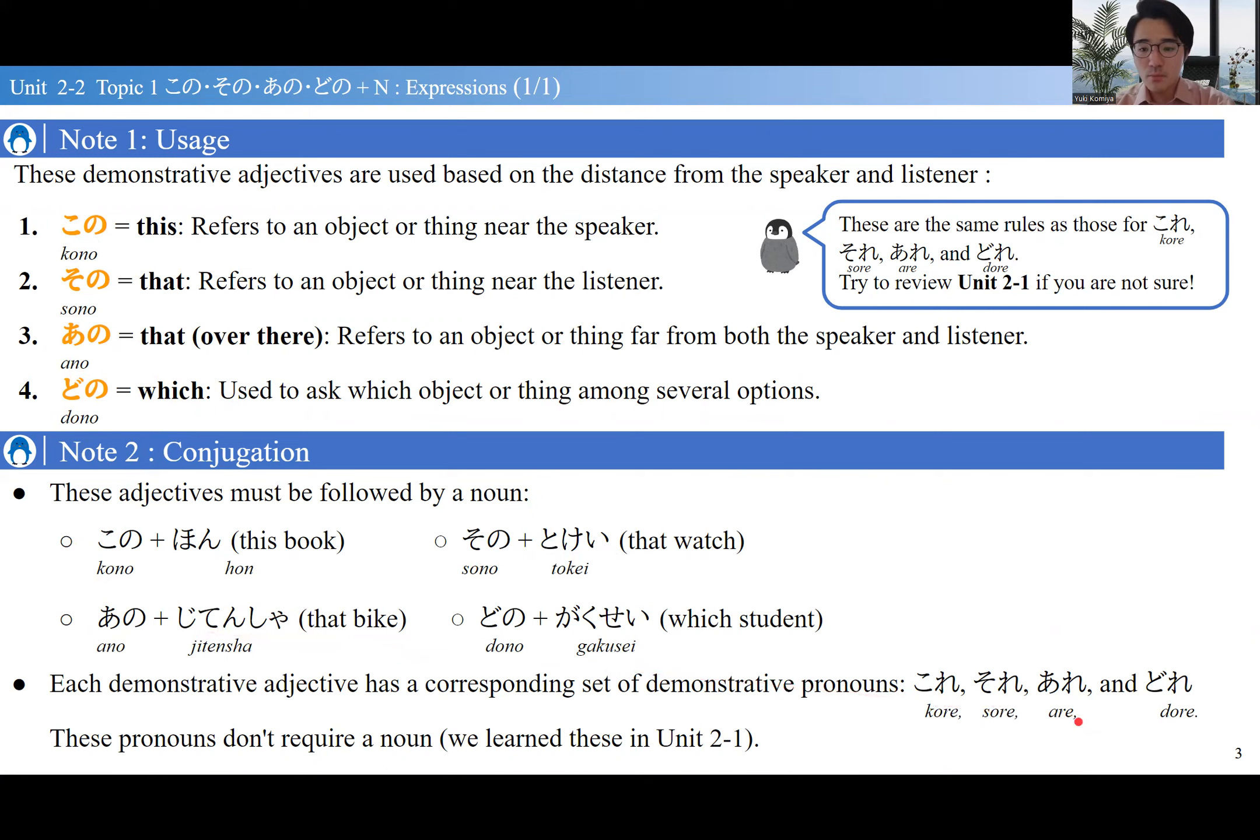Don't confuse them with これ、それ、あれ、どれ from the previous lesson. Those stand alone—これは something. They don't follow a noun. Make sure you don't confuse これ、それ、あれ、どれ with この、その、あの、どの.